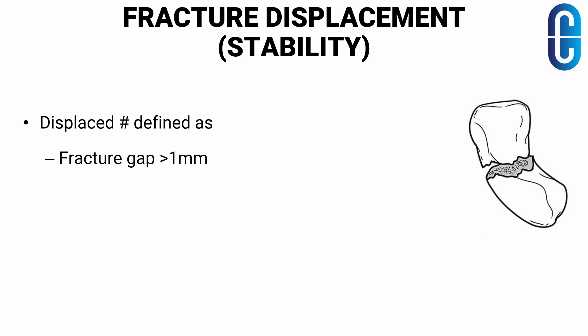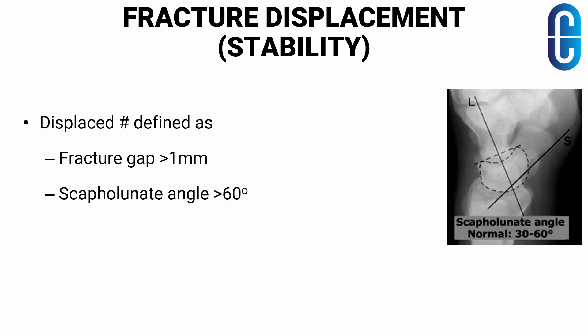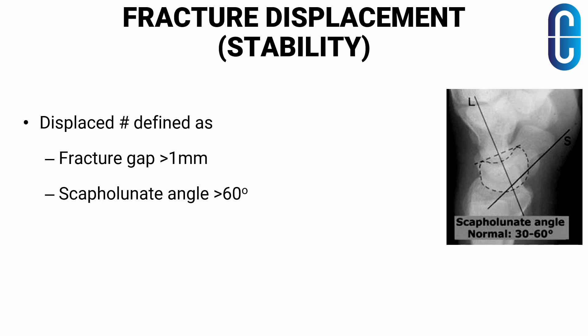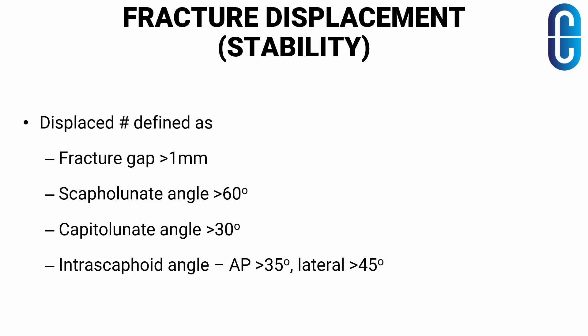A displaced or unstable fracture is characterized by a fracture gap more than one millimeter, a scaphoid-lunate angle more than 60 degrees — the normal scaphoid-lunate angle is 30 to 60 degrees — a capitolunate angle measuring more than 30 degrees (normally less than 30 degrees), and an intrascaphoid angle in AP view measuring more than 35 degrees and in lateral view more than 45 degrees. These are the criteria to describe a fracture as unstable.